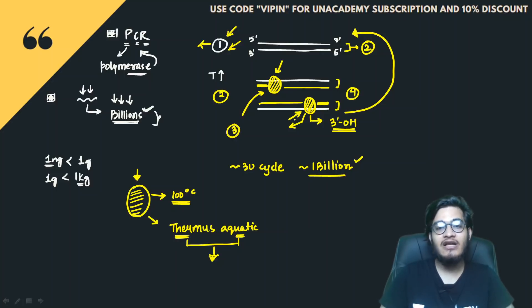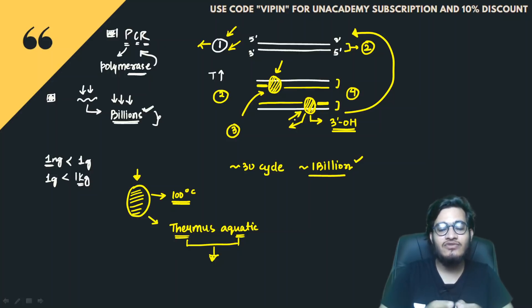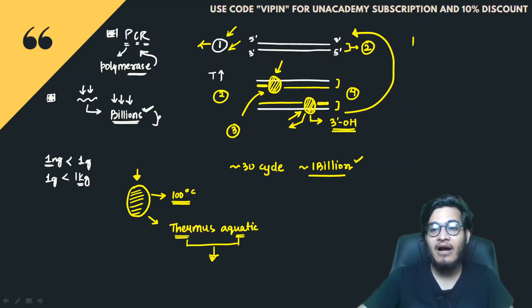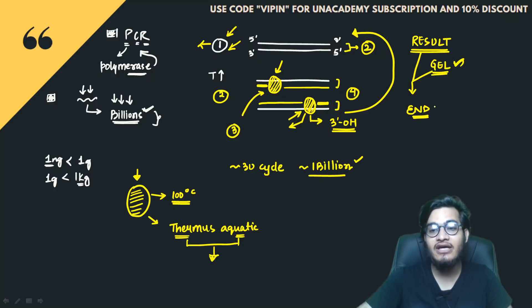यह आपका conventional PCR है। Conventional PCR में काफी बार कुछ गड़बड़ी हो जाती है — काफी बार primer का amount कम डलता है, buffer solution की concentration vary करती है, polymerase ठीक से काम नहीं कर पाता, DNA templates ठीक से primer के साथ attach नहीं हो पाते, या primer design करने में गड़बड़ हो जाती है। इन सारी वजहों से at the end आपको यह नहीं पता लग पाता कि आपका gene amplify हुआ है या नहीं — तब जब आपका पूरा PCR protocol complete हो चुका होगा और आपने gel run किया हो।